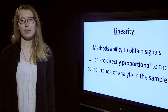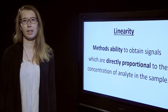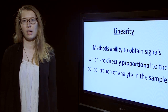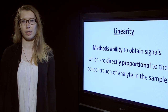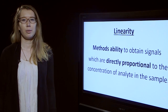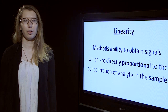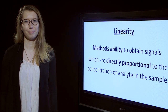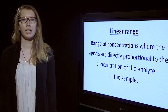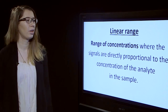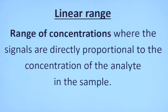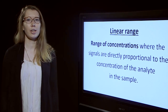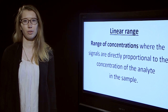In LC-MS analysis, due to the possible matrix effects in the ionization source, it is necessary to check the linearity in samples which also contain matrix components. The preparation of suitable samples will be discussed more thoroughly in the following lectures. Secondly, closely related to linearity is the linear range, which is the range of concentrations where the signals are directly proportional to the concentration of analyte in the sample. Linear range can be estimated from the experiments of linearity evaluation.